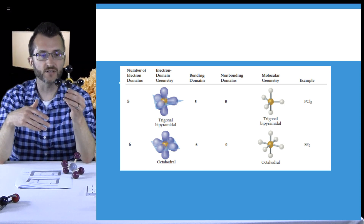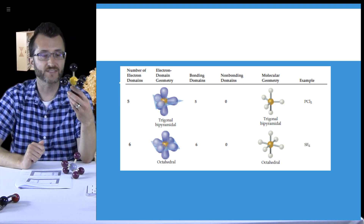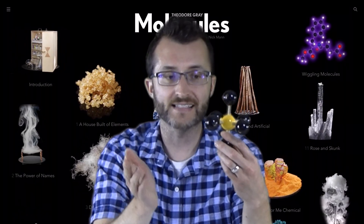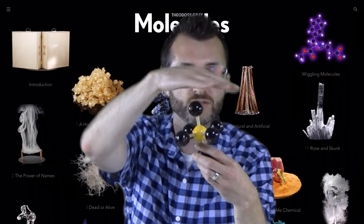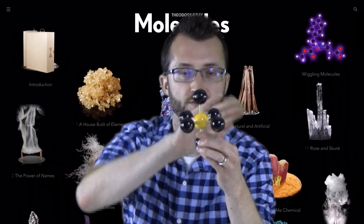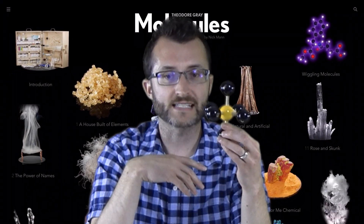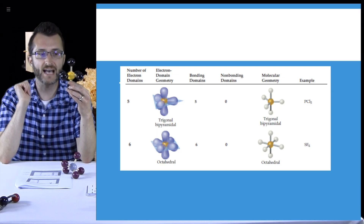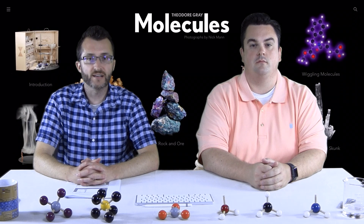Lastly, we have octahedral — like SF6, bonded to six things. The name octahedral comes from the fact that if this were a solid object, we'd actually have eight sides — two square pyramids: one, two, three, four on the top, and one, two, three, four on the bottom. That's where the name octahedral comes from, despite being bonded to six things. One last time, we have no unbonded pairs on our central atom, so this is a non-polar molecule — please label this to the right. That's it for today's episode on polarity. Later, nerds!